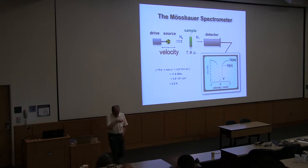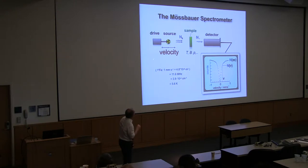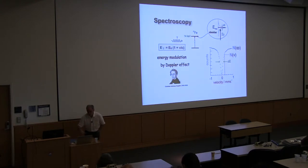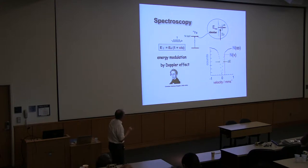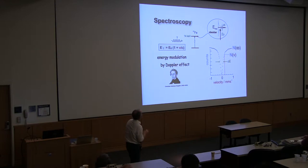Therefore a Mössbauer spectrometer is in principle a very simple instrument. We need a radioactive source. The sample is the absorber. We need only a detector to detect the intensity of light transmitted through the absorber, and we have to move the source. Then we can measure the transmission of this radiation as a function of velocity. That is the reason why Mössbauer spectra have this funny energy unit: millimeters per second. In a more microscopic picture, we modulate the energy according to the Doppler expression, where we have a modulation in units of velocity divided by the speed of light. The velocity needed to bring this setup into or out of resonance is only millimeters per second — actually a fraction of a millimeter per second.